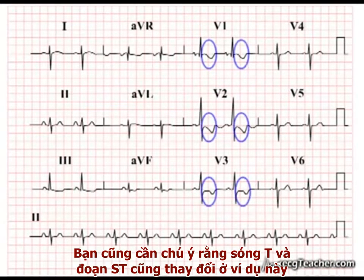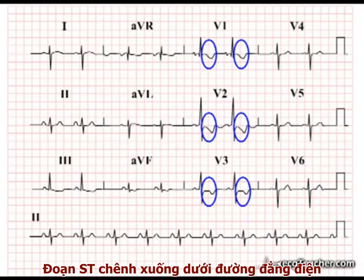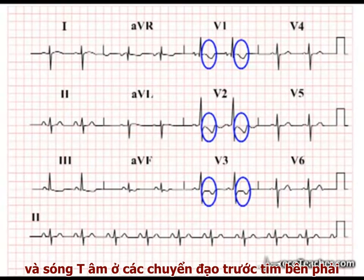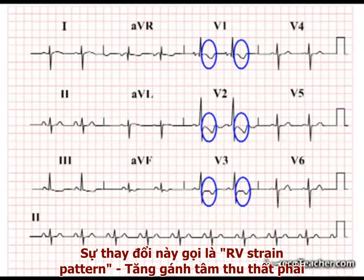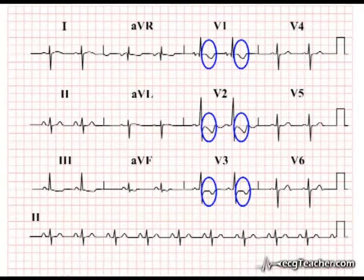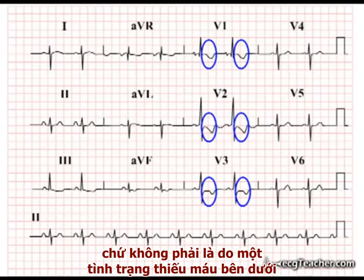You will also notice the T wave and ST segment changes present in this example. The ST segments are depressed below the isoelectric line, and the T waves are deeply inverted in the right precordial leads. These changes represent a right ventricular strain pattern secondary to hypertrophy and do not reflect any underlying acute ischemia.